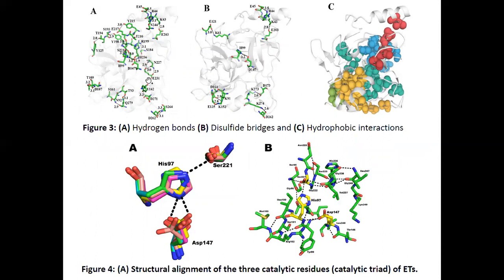We also identified various interactions in the structure of this protein — hydrogen bonding, disulfide bridges, and hydrophobic interactions — all of which stabilize the three-dimensional structure. We also compared the active site residues with other enzymes and found that all three amino acids align with each other and are stabilized by contacts from surrounding residues.